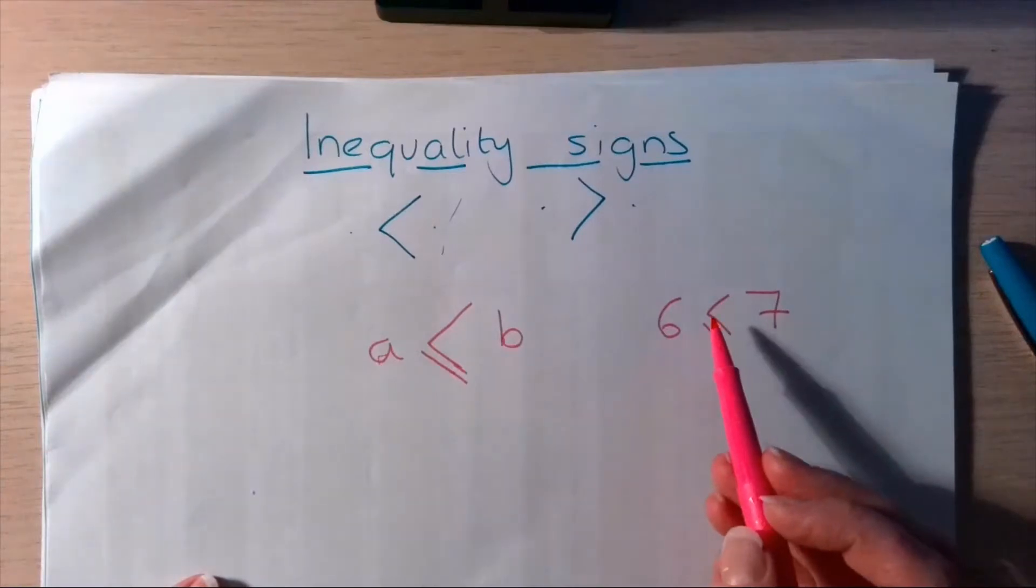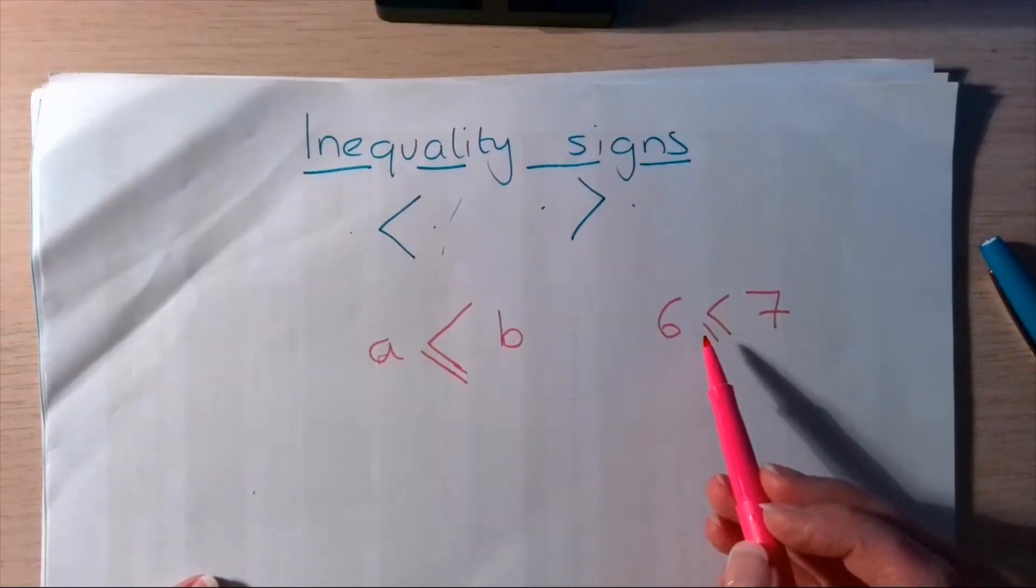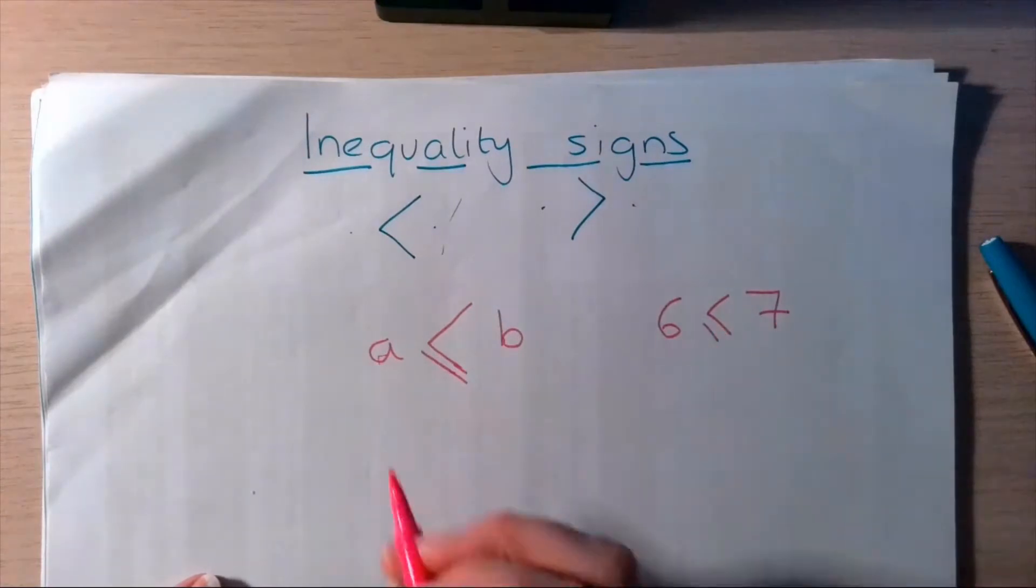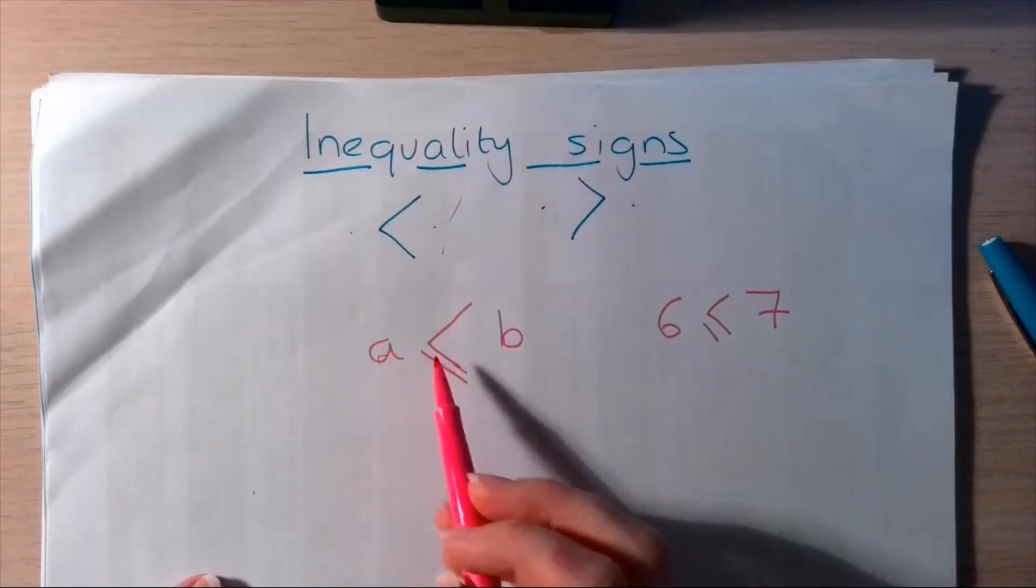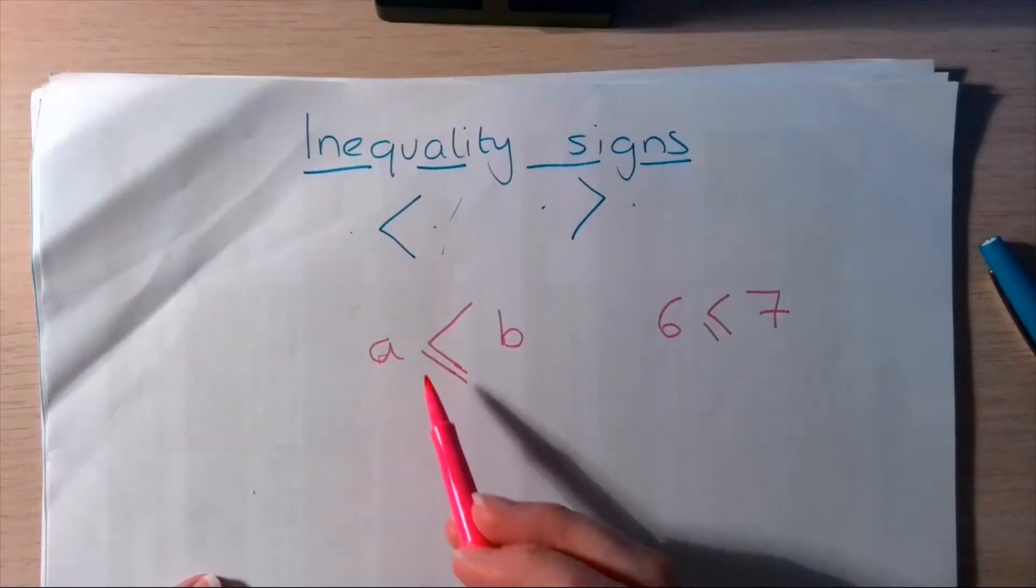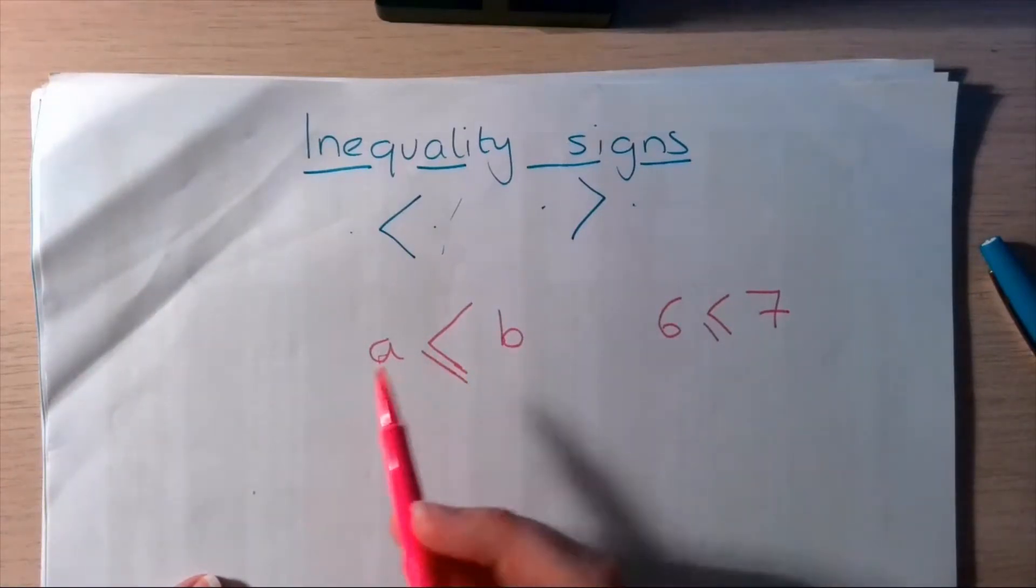It is less than or equal to. Now, we could have used this sign here, couldn't we? But there are occasions where it's important to know it's less than or equal to, because quite often we do use letters when we're doing these in algebra. And this works the same over here. We've got b is greater than or equal to a. It could be the same.